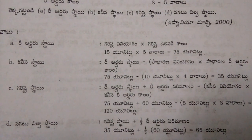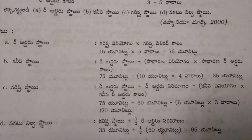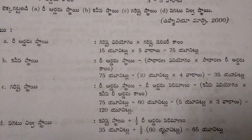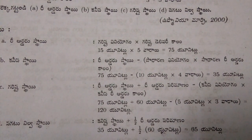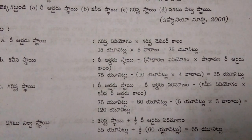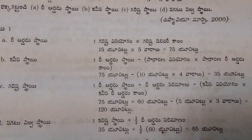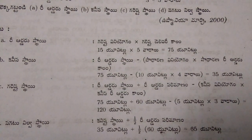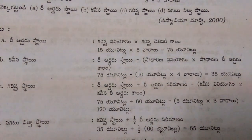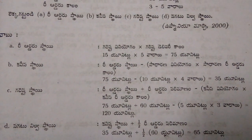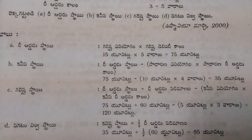Average level equals minimum level plus half of reorder quantity. So 35 plus half of 60 units, that is 30. 35 plus 30 equals 65 units.